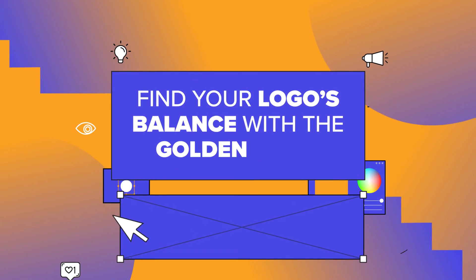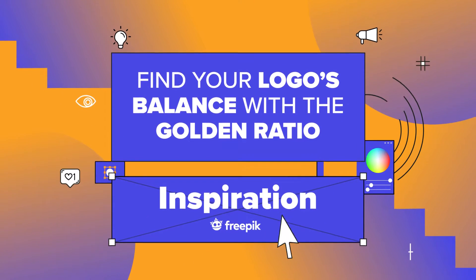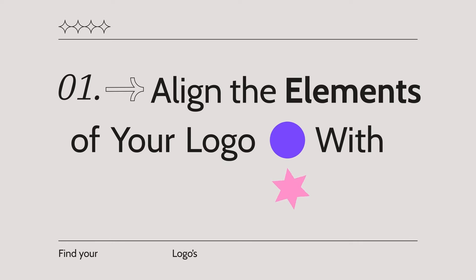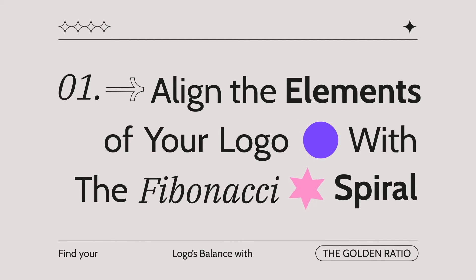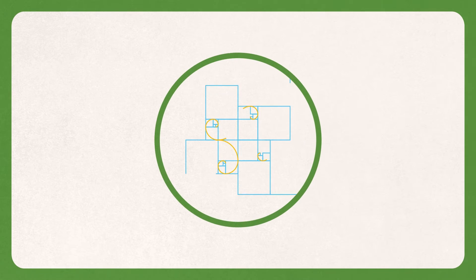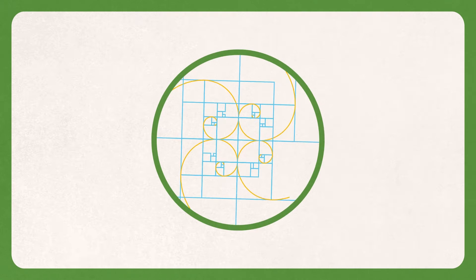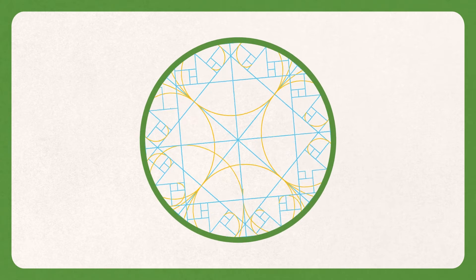Find your logo's balance with the Golden Ratio. Align the elements of your logo with the Fibonacci spiral. With your friend Fibonacci, you will achieve harmonious proportions.